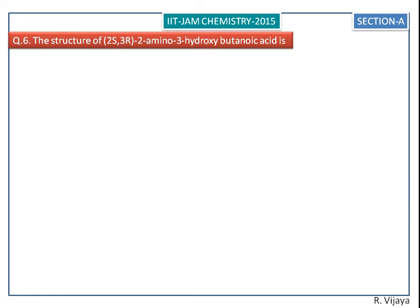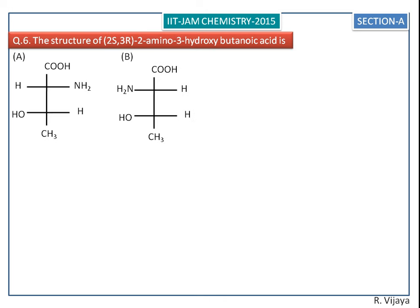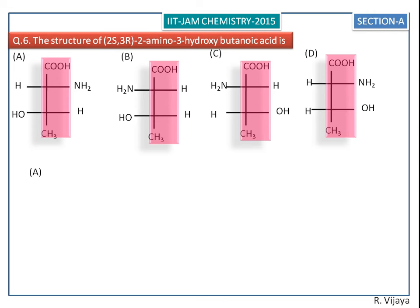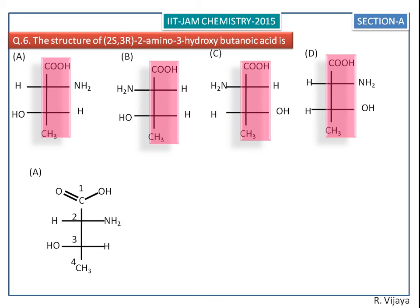The structure of 2S,3R-2-amino-3-hydroxybutanoic acid is shown with several options, all having the common carbon skeleton. First we see the A structure. All the structures have two chiral carbon centers, that is the second and third carbon atoms.